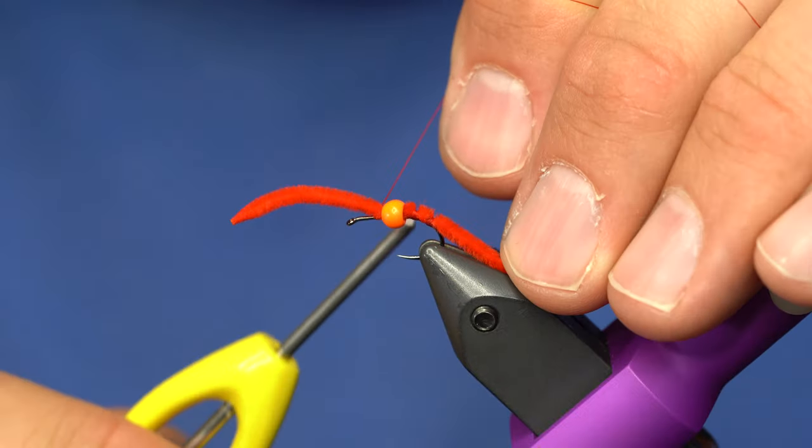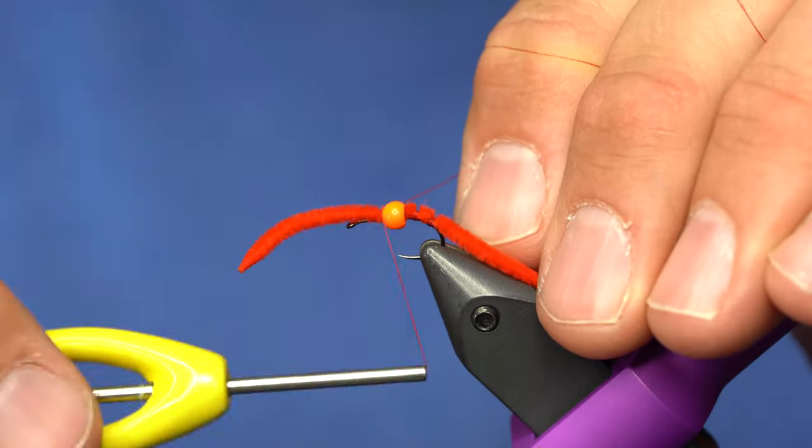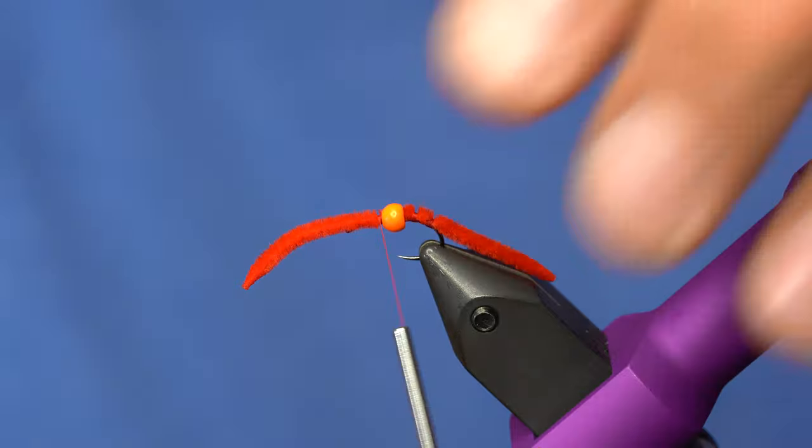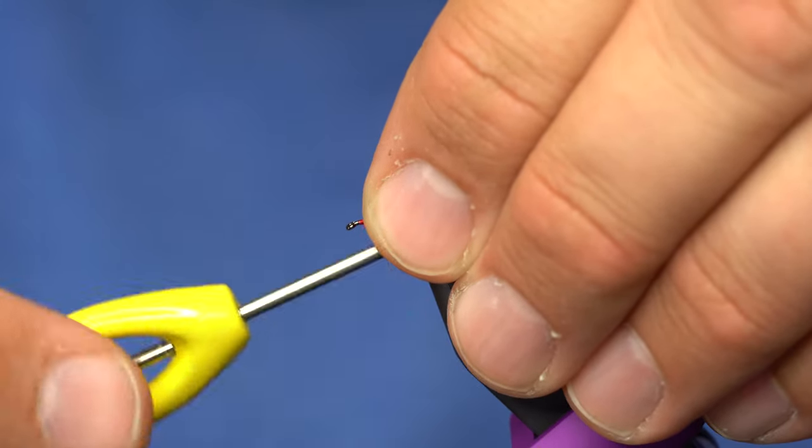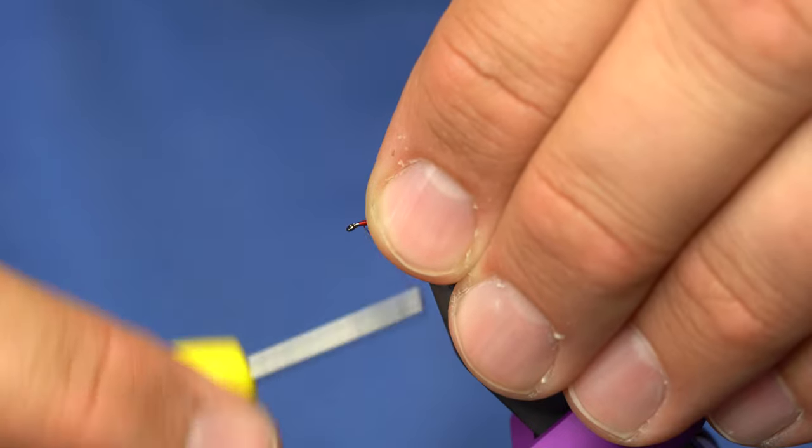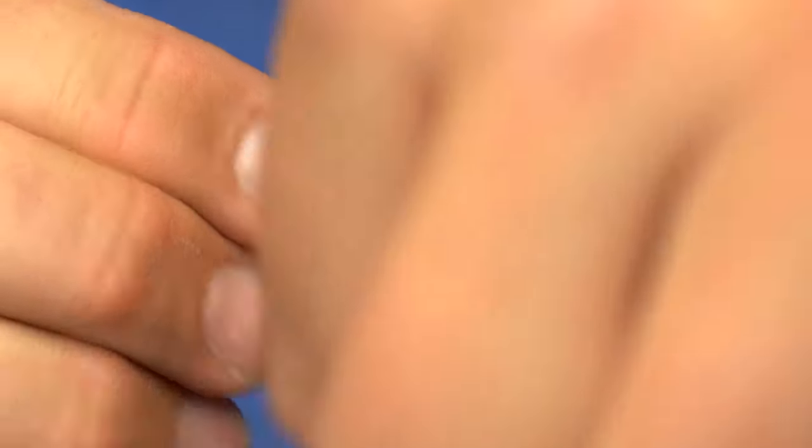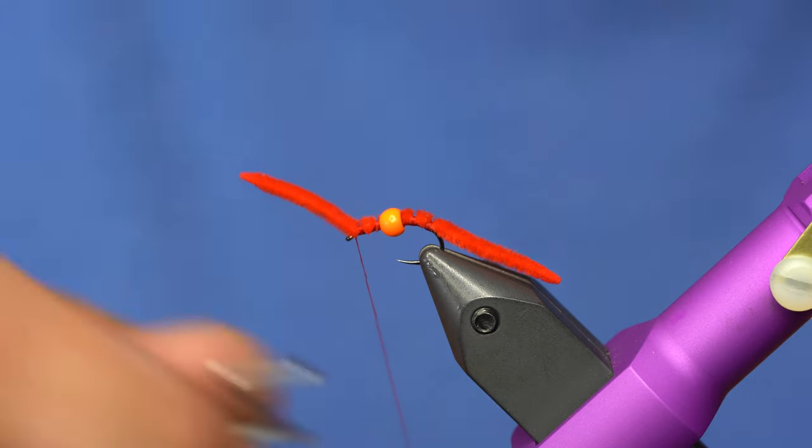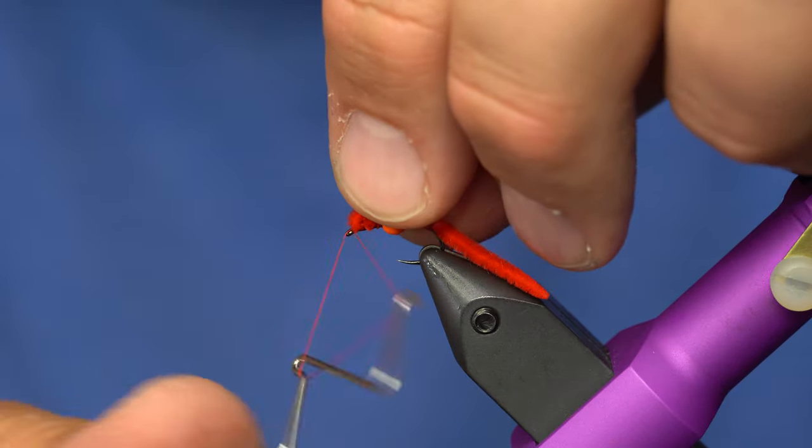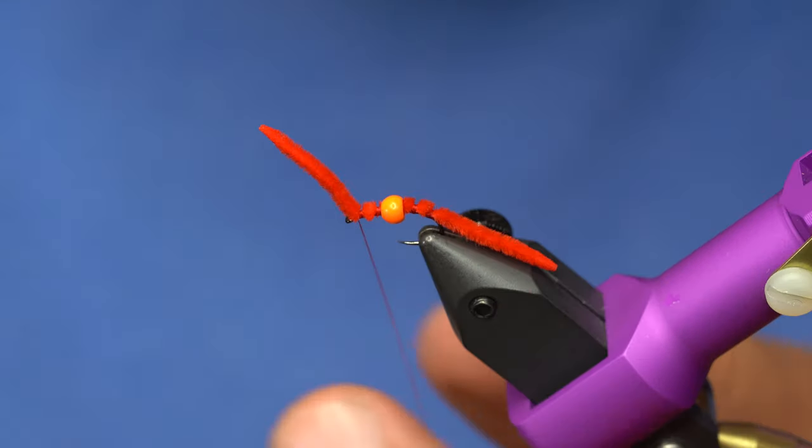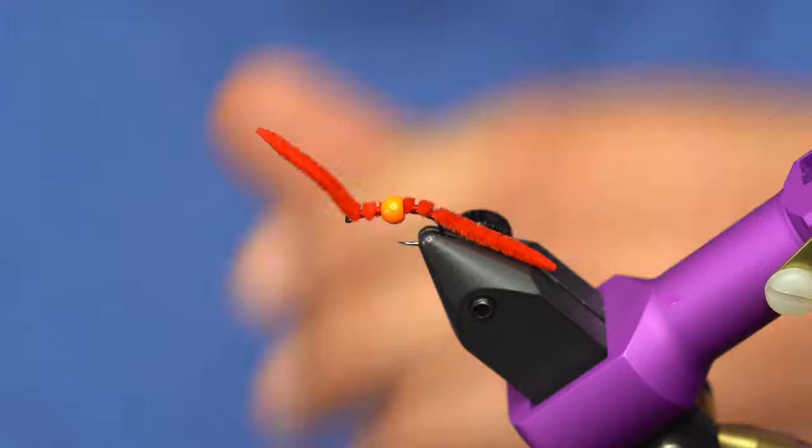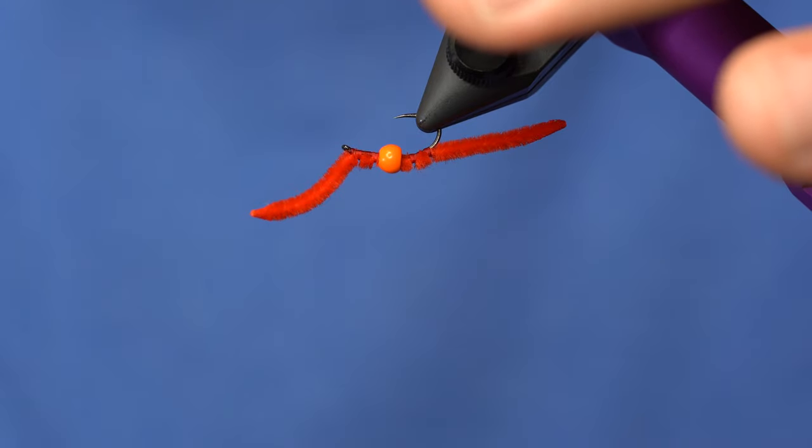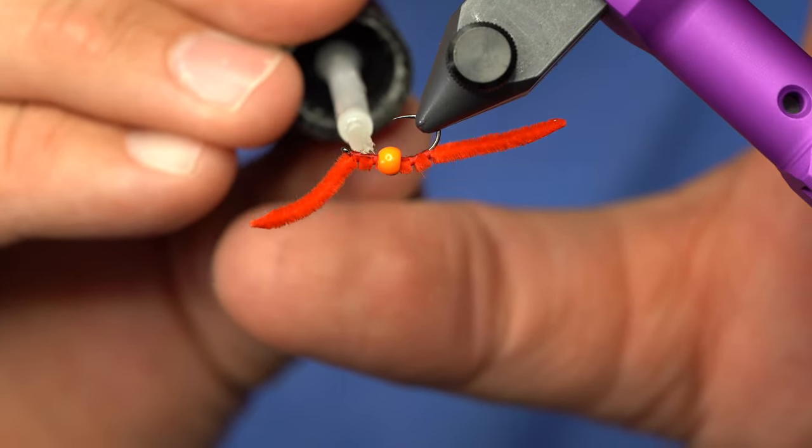All right, so I'll reattach my thread under here. Start with three or four turns of thread at that point, and then I'll just build up a little bit of a body, and then just catch that in right behind the eye. Whip finish it, and then with this one you definitely want to make sure to glue the underside of this. Just makes this a lot more durable.